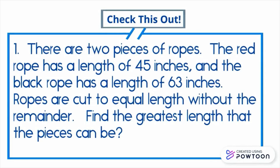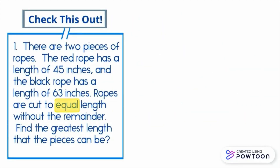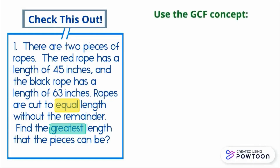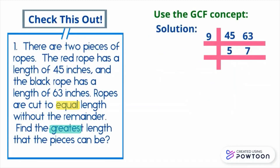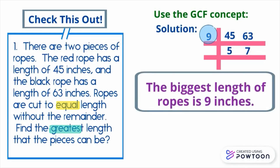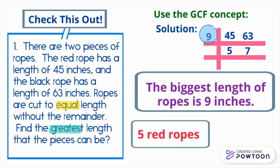There are two pieces of rope. The red rope has a length of 45 inches and the black rope has a length of 63 inches. The ropes are cut to equal lengths without a remainder. Find the greatest length that each piece can be. Our keywords are 'equal' and 'greatest,' so we use the GCF concept. If 45 is divided by GCF 9, the answer is 5. If 63 is divided by 9, the result is 7. The biggest length of rope is 9 inches. There will be 5 red ropes cut into equal lengths of 9 inches.